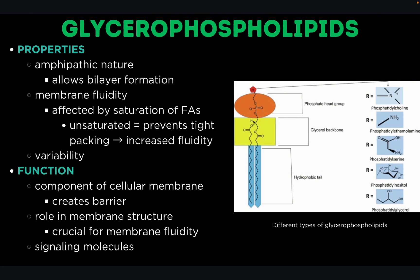Now let's talk about the functions of glycerophospholipids. They are the fundamental component of cellular membranes, giving the ability to create a bilayer. This bilayer creates a selective membrane that regulates the movement of substances in and out of the cell. Glycerophospholipids can exist in gel and liquid crystalline states, which is crucial for membrane fluidity, allowing processes such as membrane fusion and vesicle formation. They also function in signaling pathways as signaling molecules.